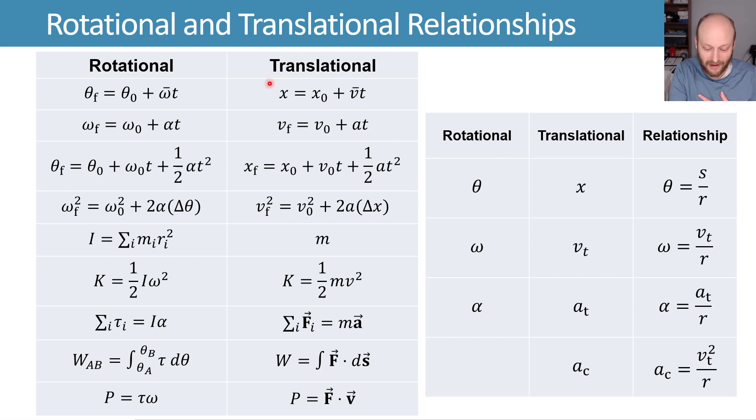So we have our translational relationships, we have our analogous rotational relationships, and we have our x, v, and a analogous to our theta, omega, and alpha.